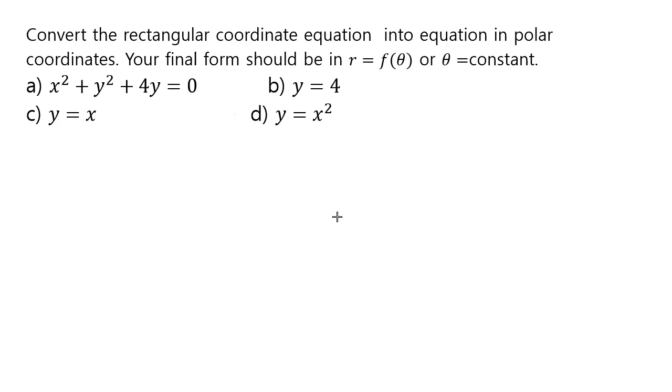Now changing rectangular coordinates equation to polar coordinate equation requires you to know the following formulas. R is equal to square root of x squared plus y squared, which means if you square both sides you get r squared equal to x squared plus y squared.